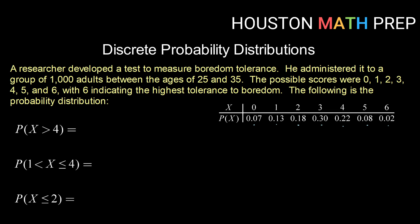The second thing that we should check is that if we were to sum up each of these probabilities. So if we were to do 0.07 plus 0.13 plus 0.18 plus 0.3 plus 0.22 plus 0.08 plus 0.02, they should equal 1. And if we check that out and verify, we do get that the sum of all of our probabilities is 1. So we have a valid probability distribution.